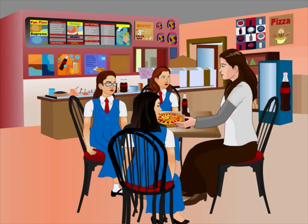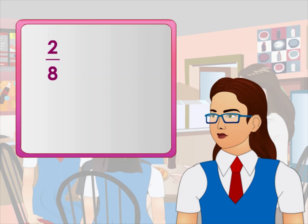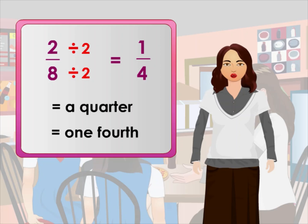Let's hear what his father has to say. Remember to say fractions in their simplest form. How, Mom? We can simplify fractions to the simplest form by dividing the numerator and denominator by the same number. So two divided by two is one, and eight divided by two is four. The simplest form of two over eight is one over four. You learn very fast! It's called a quarter, or one fourth.